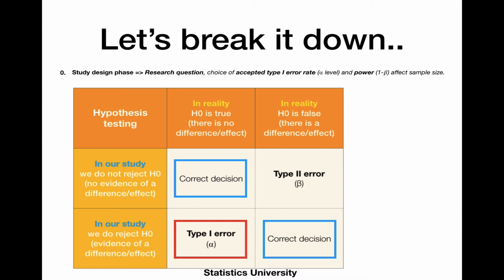On the other hand, we can also falsely not reject the null hypothesis. So, we say there is no evidence of a difference or effect, whereas in reality, there is such a difference or effect. That's what we call the type 2 error. This means that we fail to detect a realistic difference or effect. And the power is 1 minus that beta, because it's the probability of detecting a true difference or effect.